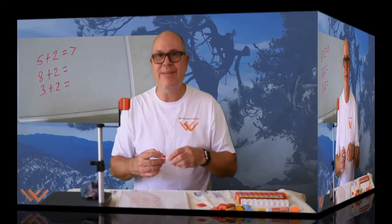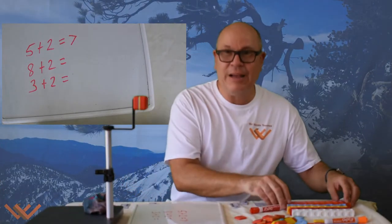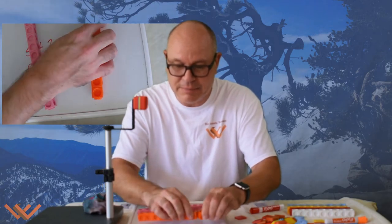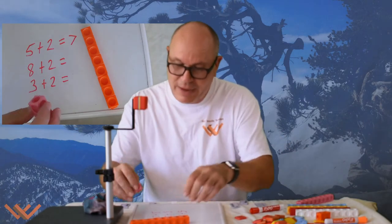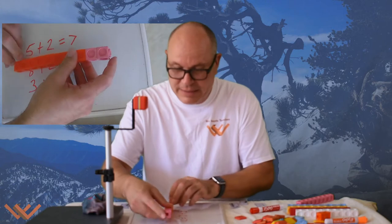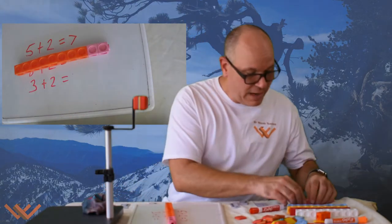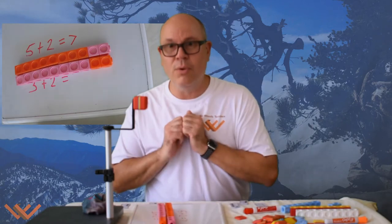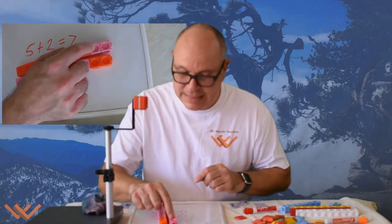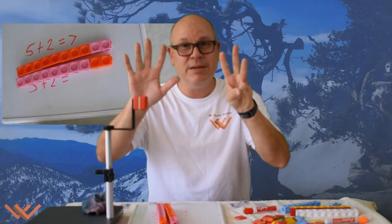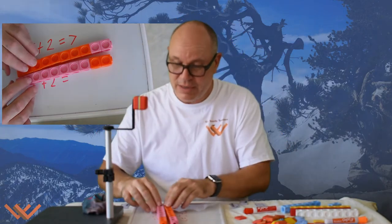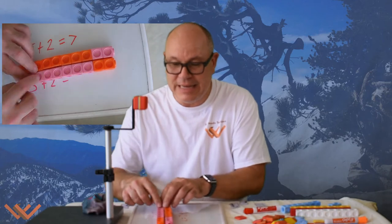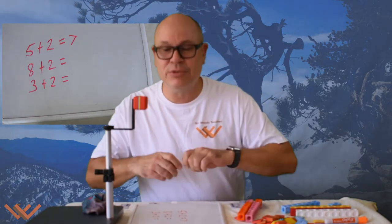Let's take a look at the next equation: eight plus two. I have some blocks — I like using blocks too. We have one, two, three, four, five, six, seven, eight, and then I'm going to use a different color for two. So I have eight plus two. I can count it all up: one, two, three, four, five, six, seven, eight, nine, ten. So eight, put up your fingers, plus two more is ten. And look at this — two plus eight is going to be equal to the same. So eight plus two is equal to ten.